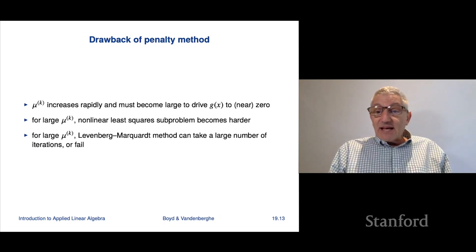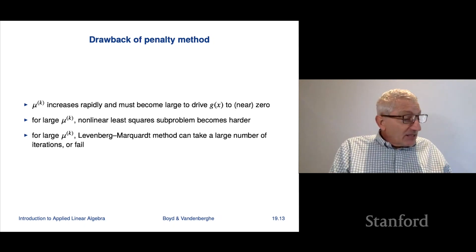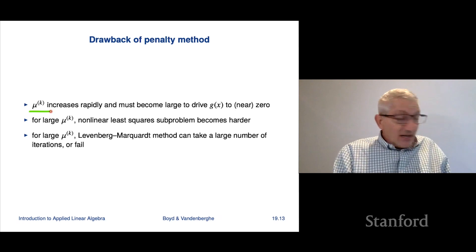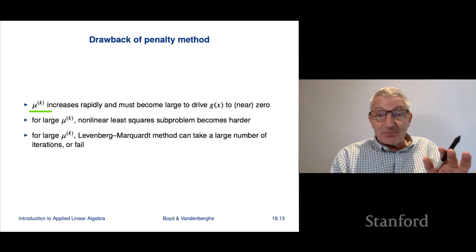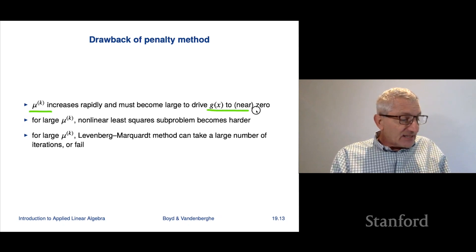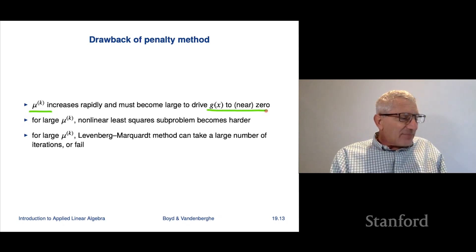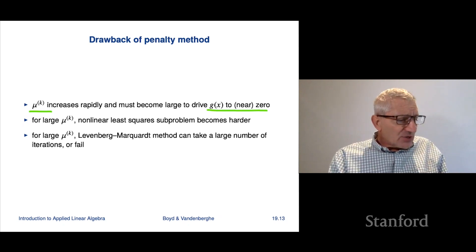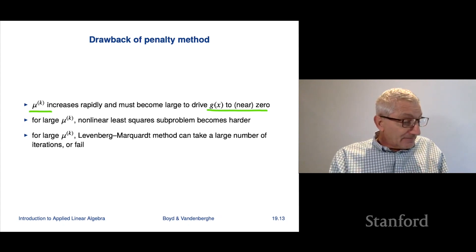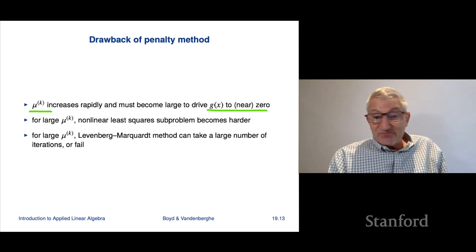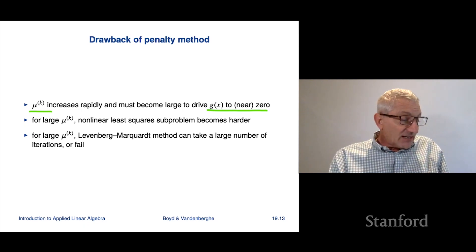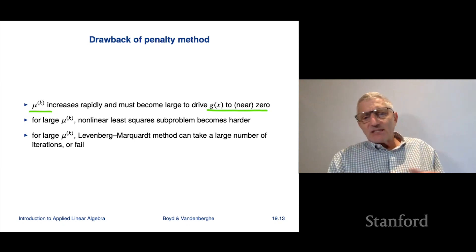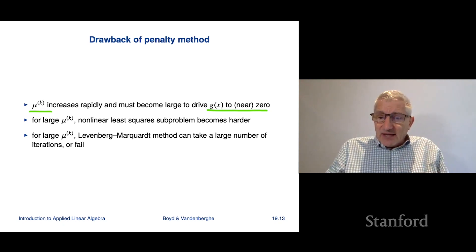As I said, the drawback of the penalty method is that mu, this penalty parameter mu k, increases rapidly and it has to get big to drive g of x to 0. And what happens is when you do that, the nonlinear least squares subproblem becomes harder to solve. We observed that for very large mu k, Levenberg-Marquardt can either take a large number of iterations or fail. By fail, it just means as a practical matter it just takes too long and doesn't work.